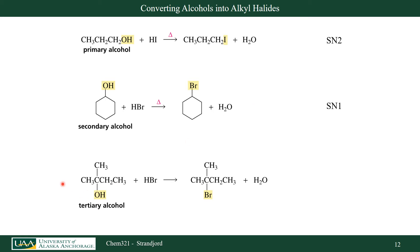The third example is a tertiary alcohol. We know those highly favor SN1 reactions. So I protonate the alcohol's hydroxyl group with HBr, form my carbocation, look for rearrangements — I already have the most stable one. This is an SN1 substitution reaction to turn a tertiary alcohol into a tertiary alkyl halide.